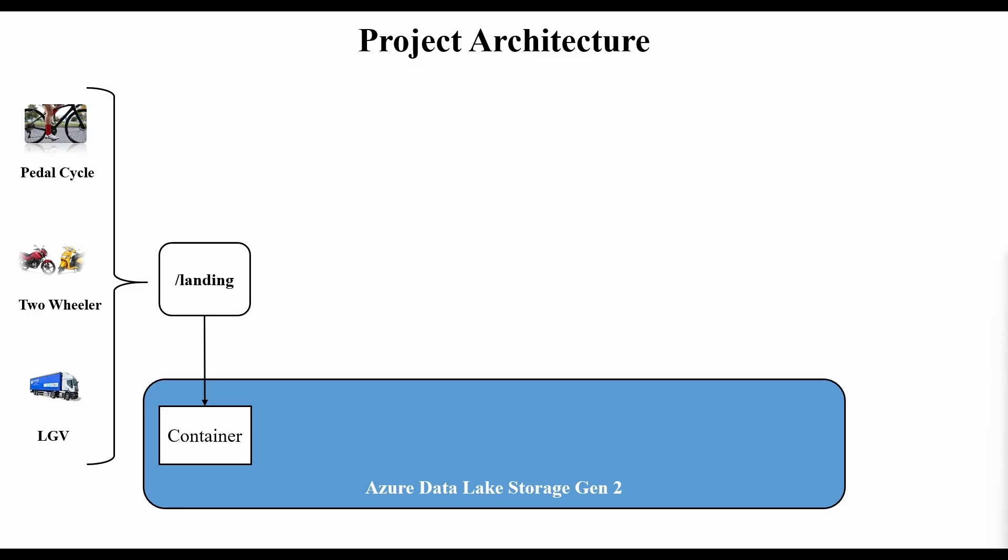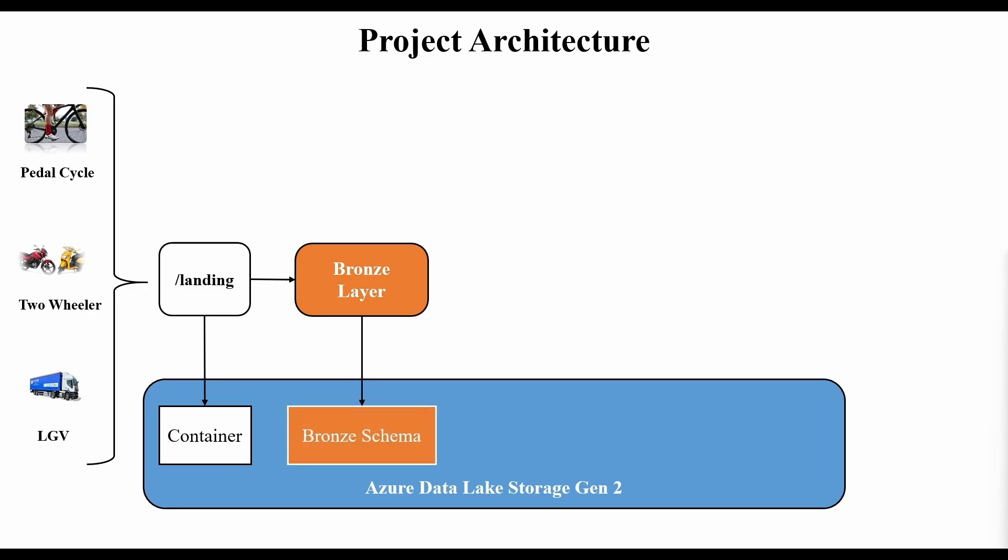Then we will take the data to a bronze layer, which is typically a layer that stores all the data coming from the landing zone. We will create these using Azure Databricks notebooks. The idea is we need to incrementally ingest the data from landing zone to the bronze layer. Typically, there will be an exact copy of the data taken to the bronze layer, which will act as a single source of truth for downstream transformations. We will perform few transformations on top of the bronze tables and ensure that transformations are performed only on the newly added records rather than existing ones.